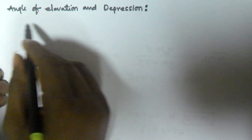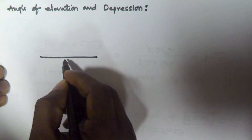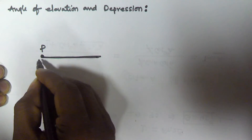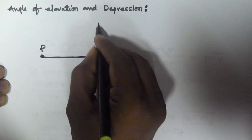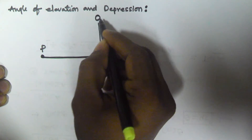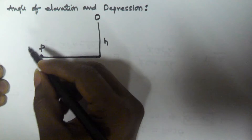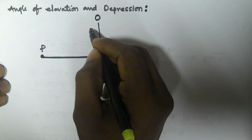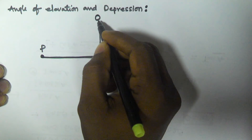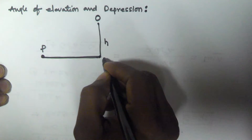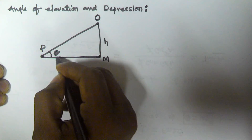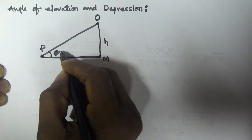Hello friends, in this video we will see what is angle of elevation and depression. Let us assume there is a flat surface, upon which one person P is here. At a certain distance, at height H, one object O is there. If person P is looking at object O, which is at a higher level than P, and we call this position M, then the angle OPM — theta — is called the angle of elevation.